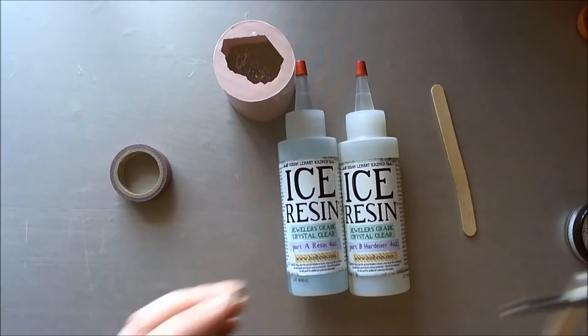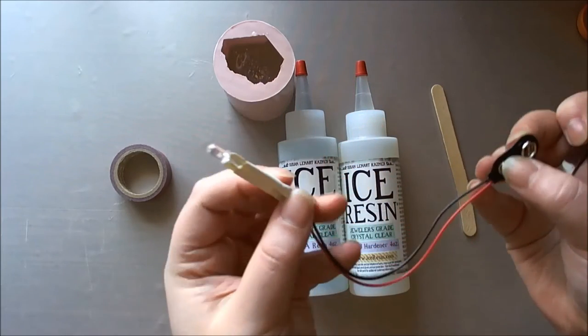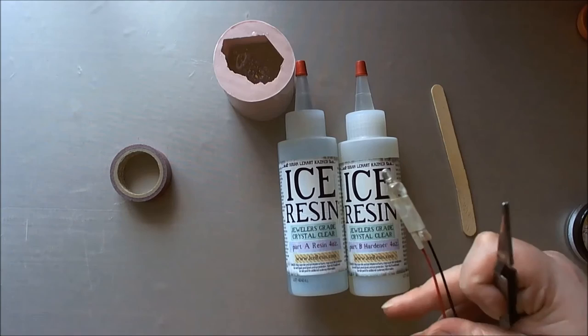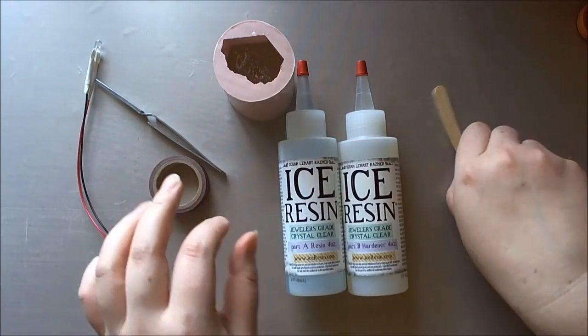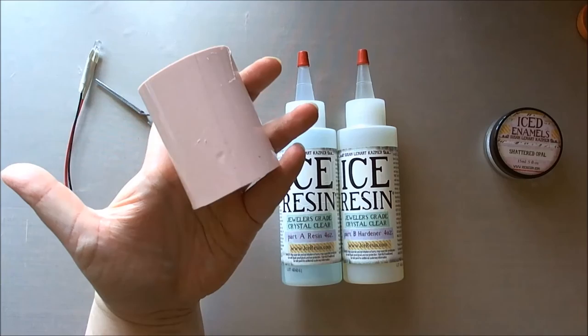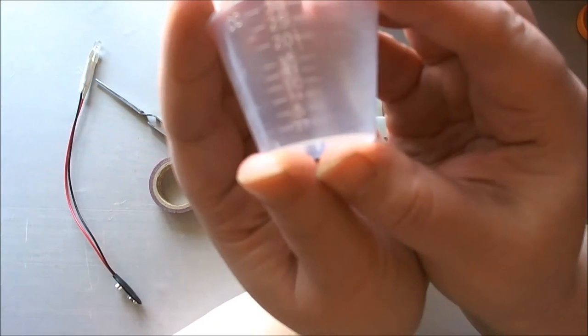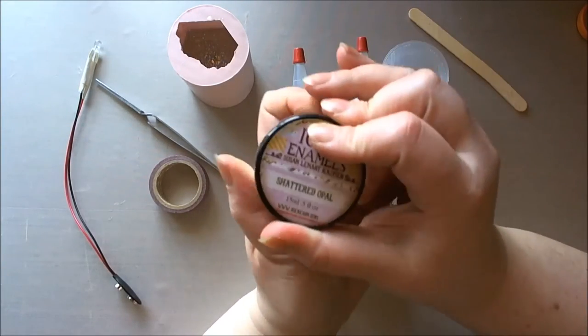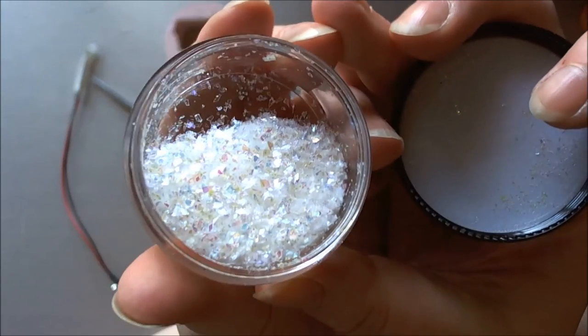So for the second part of the project, I'm going to need my self-gripping tweezers, my LED now attached. I always check it and attach it first because there is a slight chance that you could blow the LED as you are soldering on the wire. I've got some washi tape, I've got my ice resin, then my mold which I've already did on a first pour because obviously this is a huge mold, it takes quite a lot. I've got my stirring stick and my mixing cup marked up from ice resin. And I've got the iced enamels in shattered opal because I am adding them in to the mix.